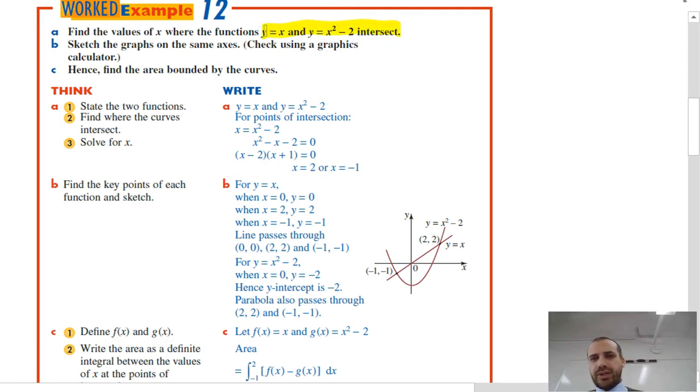So if I want to know where they intersect, I let one equation equal the other. So x equals x squared minus 2, and I get these two intersection points, x equals 2 and x equals negative 1. I'm really just solving the two equations simultaneously to find where they intersect.